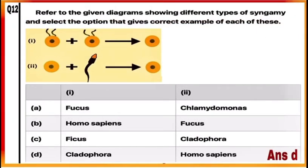Question 12: In these diagrams, types of syngamy are shown. Syngamy means fusion of male and female gametes and formation of a zygote. In Diagram 1, both male and female gametes are similar and fuse to form a zygote, as in the case of Cladophora. In Diagram 2, fusion of gametes takes place where male and female gametes differ from each other, as in Homo sapiens. So the correct answer is D: Diagram 1 shows syngamy in Cladophora and Diagram 2 shows syngamy in Homo sapiens.